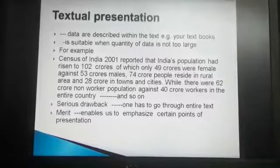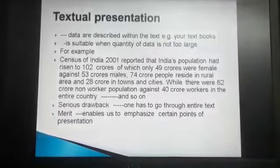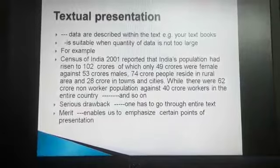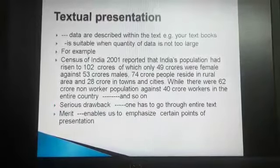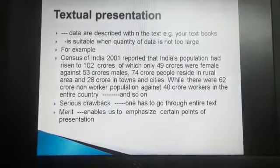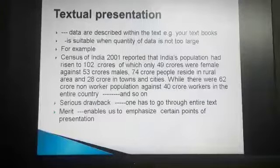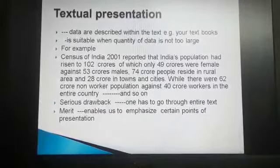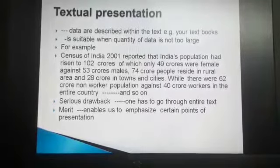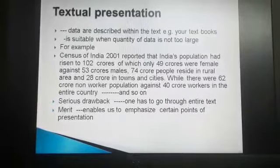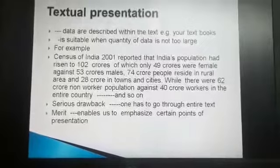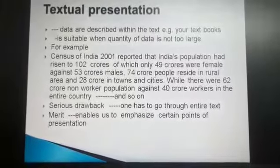For example, the Census of India 2001 reported that the Indian population had risen to 102 crores, of which only 49 crores were females against 53 crores male. 74 crores people resided in rural India and only 28 crores lived in towns or cities. While there were 62 crores non-worker population against 40 crores workers in the entire country, and so on.